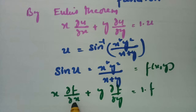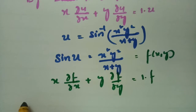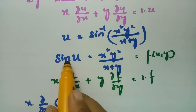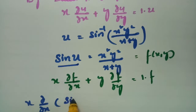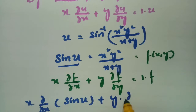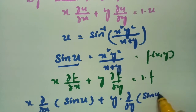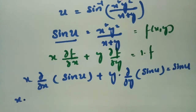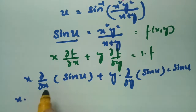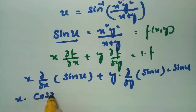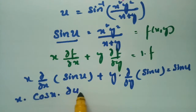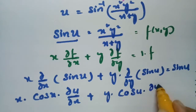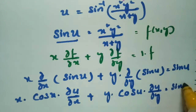Now, ∂f/∂x means x times ∂/∂x of f, where f is sine u. So differentiating sine u with respect to x gives cos u times ∂u/∂x. Similarly, y times ∂/∂y of sine u gives cos u times ∂u/∂y. The right-hand side equals sine u.